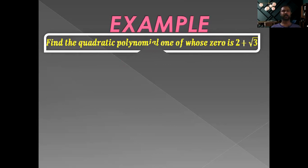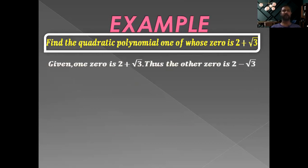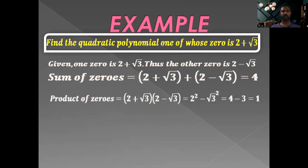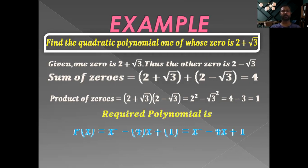Find the quadratic polynomial one of whose zeros is 2 plus root 3. Since this is an irrational zero, the other zero is its conjugate 2 minus root 3. Sum of zeros: (2 plus root 3) plus (2 minus root 3) equals 4, as the root 3 terms cancel. Product of zeros: (2 plus root 3)(2 minus root 3) equals 2 square minus (root 3) square equals 4 minus 3 equals 1. Therefore P(x) equals x square minus 4x plus 1.